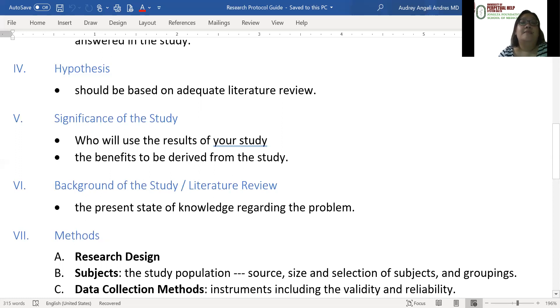The benefits to be derived from the study. Background of the study or literature review—this is your review of related literature. This is the present state of knowledge regarding the problem. This would be different journals that are related to your research.